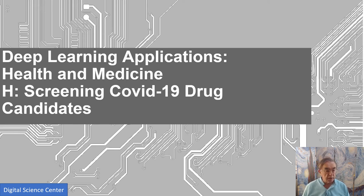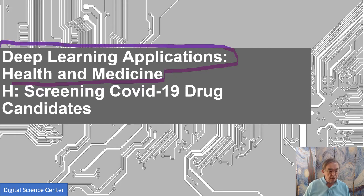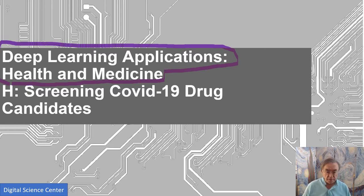Here we have the second-to-last section in this unit on AI for health and medicine. This comes from work of a colleague of mine, Shantanu Jha, and collaborators at Argonne National Lab, such as Rick Stevens. It is using high-performance computing to screen drug candidates. The lessons you'll learn here are applicable to many other projects. Section H: screening COVID-19 drug candidates.